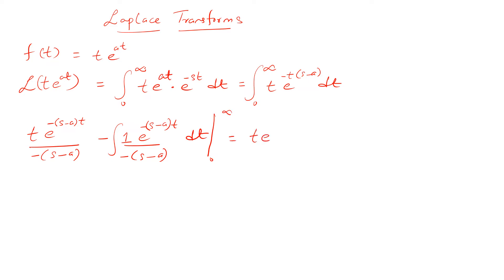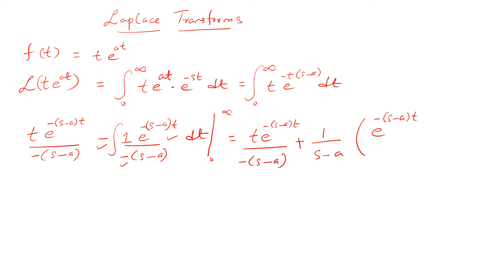The first term remains as is. The negative signs combine to keep the result positive. Integrating, we take 1/(s-a) outside, and we get e^(-(s-a)t) divided by (s-a), with a negative sign, evaluated from 0 to infinity.